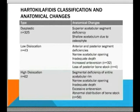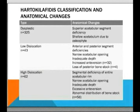For the dysplastic type, all 325 cases had a superior acetabular segment deficiency and a shallow acetabulum. Of the 43 patients with low dislocation, there were anterior and posterior segment deficiencies, a narrow acetabular opening, inadequate depth, increased anteversion in 32 cases, and loss of posterior bone stock in four. In the high dislocation group, there was segmental deficiency of the entire acetabular rim, a narrow opening, shallow depth, excessive anteversion of the true acetabulum, and an abnormal distribution of bone stock.